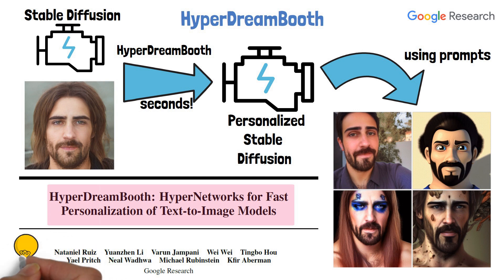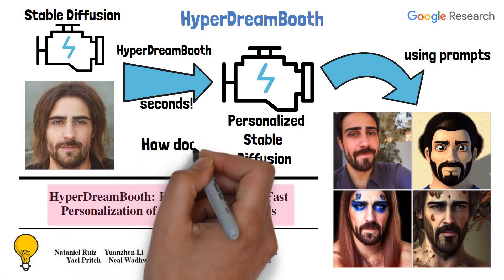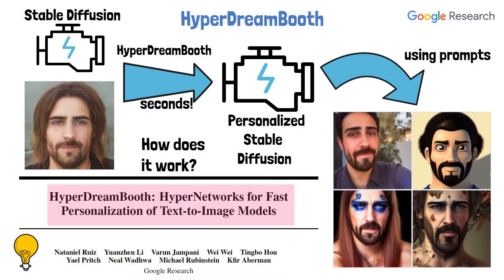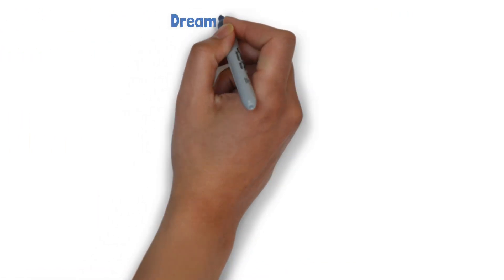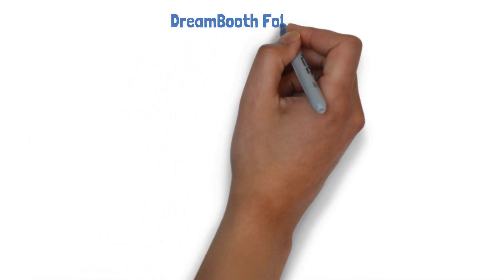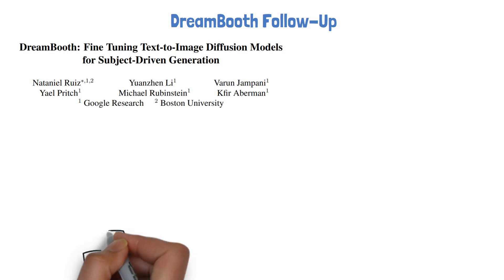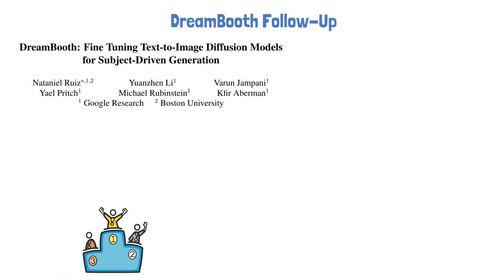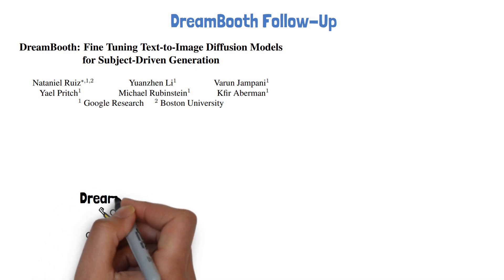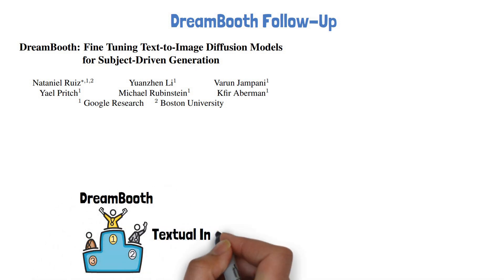In this video our goal as usual is to understand this paper by explaining how this method works. HyperDreamBooth is a follow-up work to DreamBooth, which was presented in a research paper from Google earlier this year, and it is one of the top methods to personalize Stable Diffusion already, together with other methods such as textual inversion.